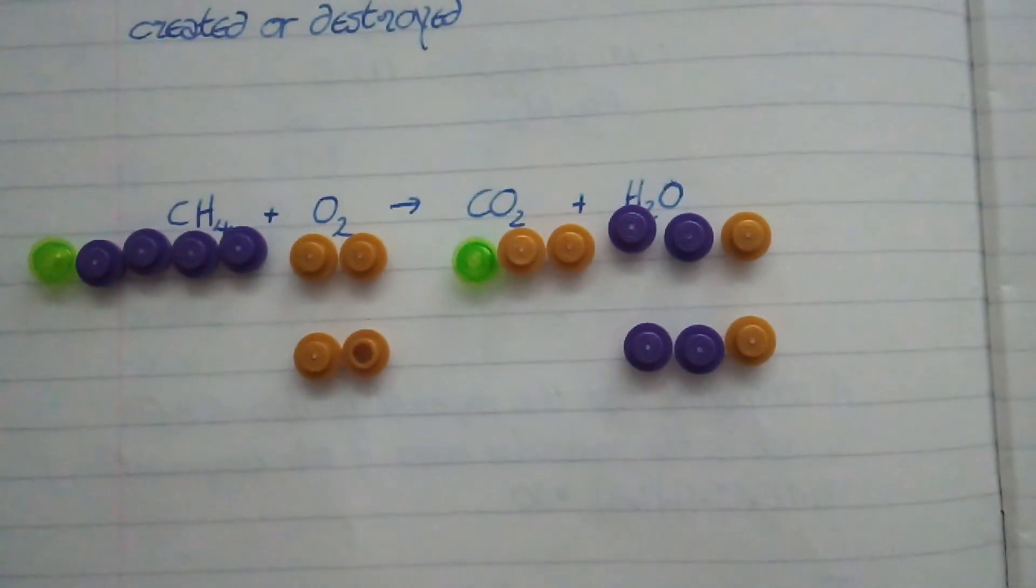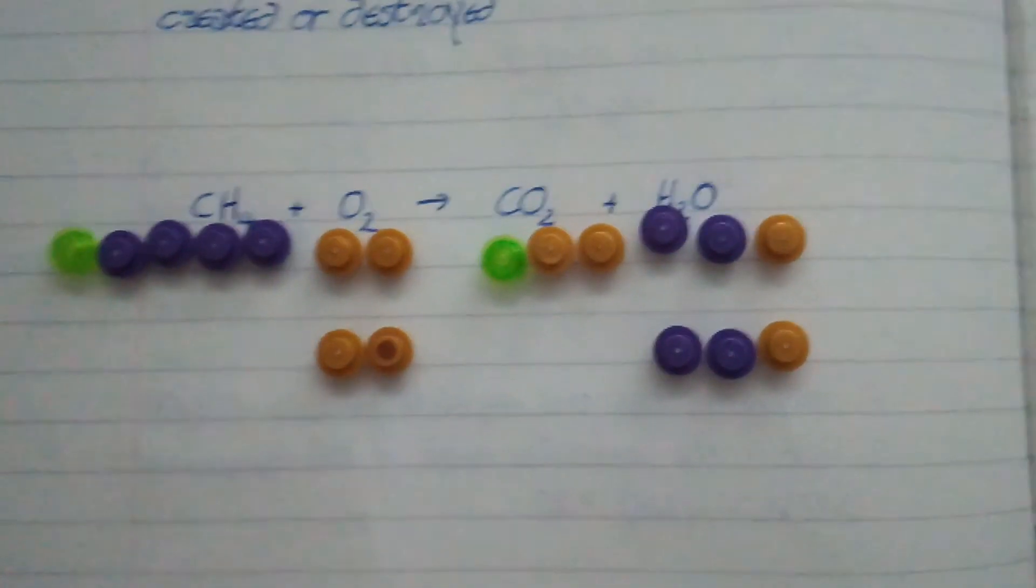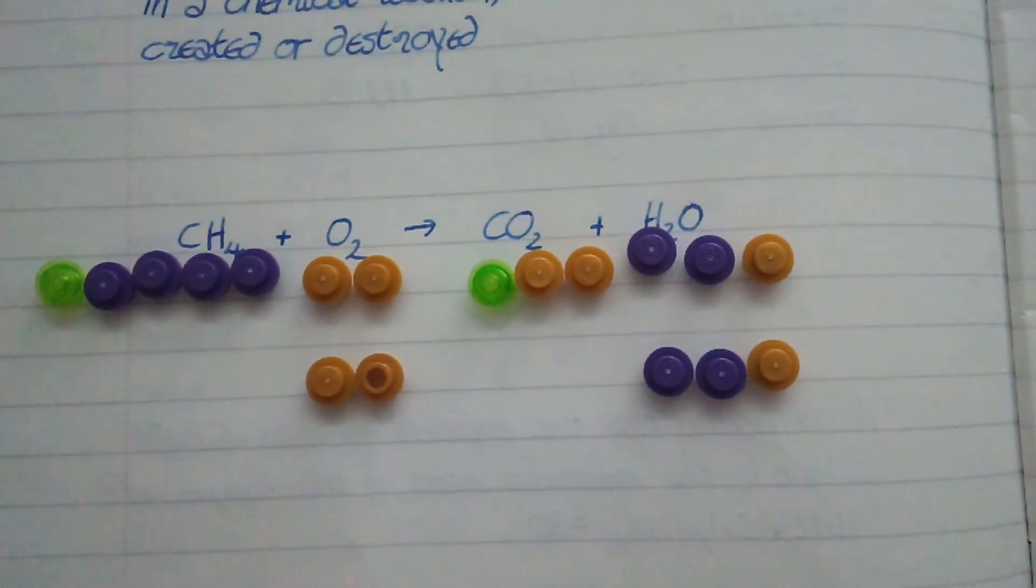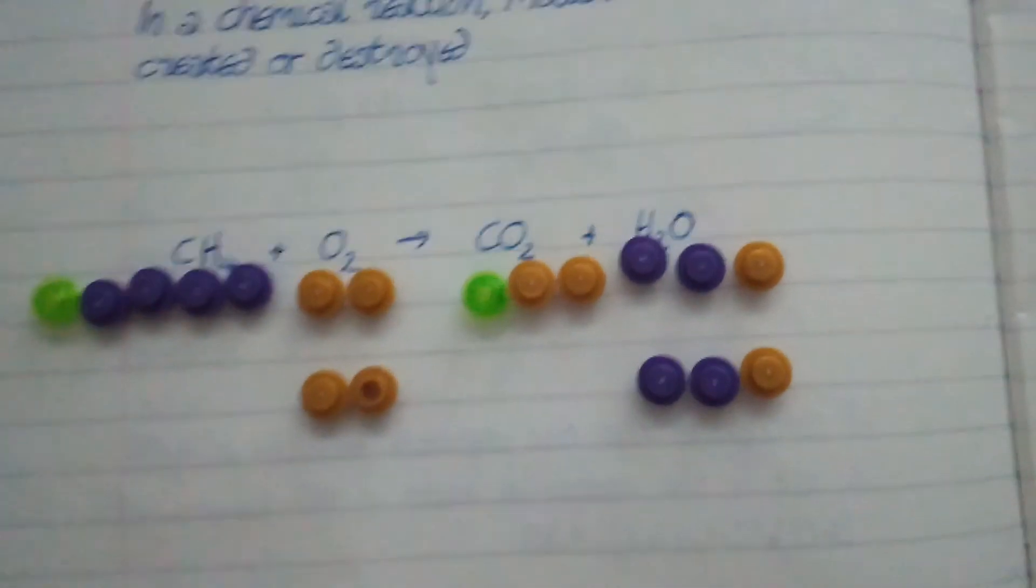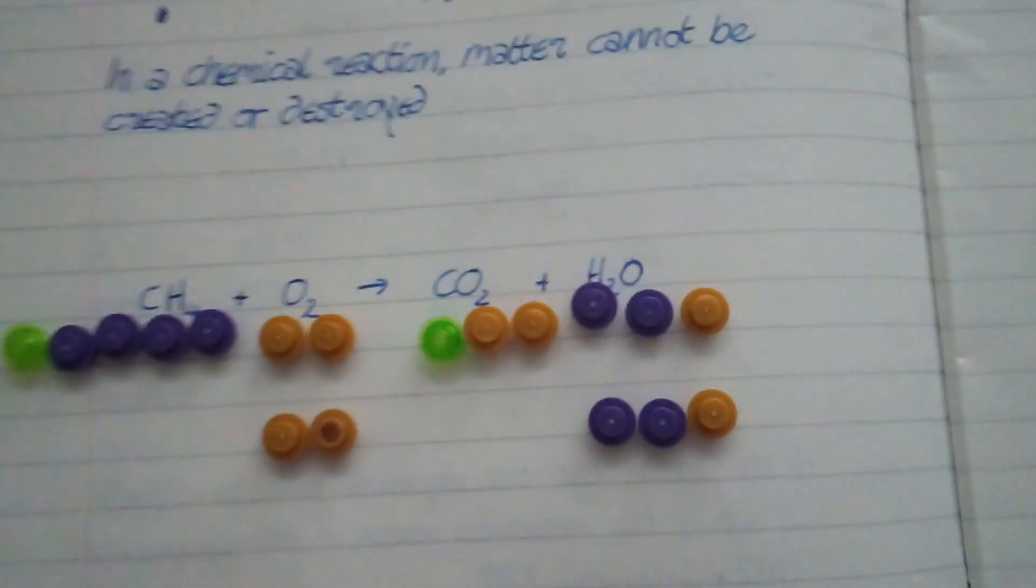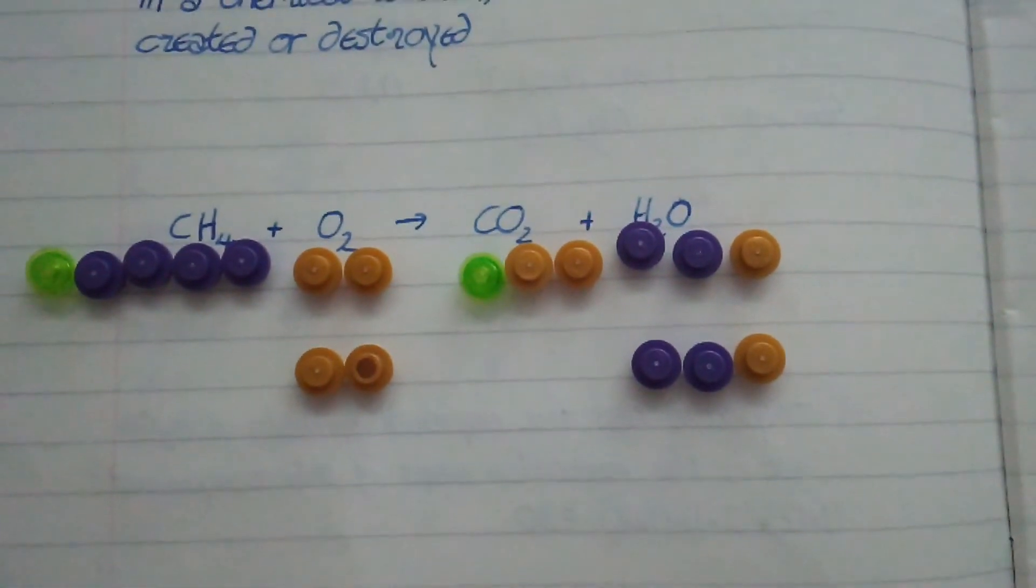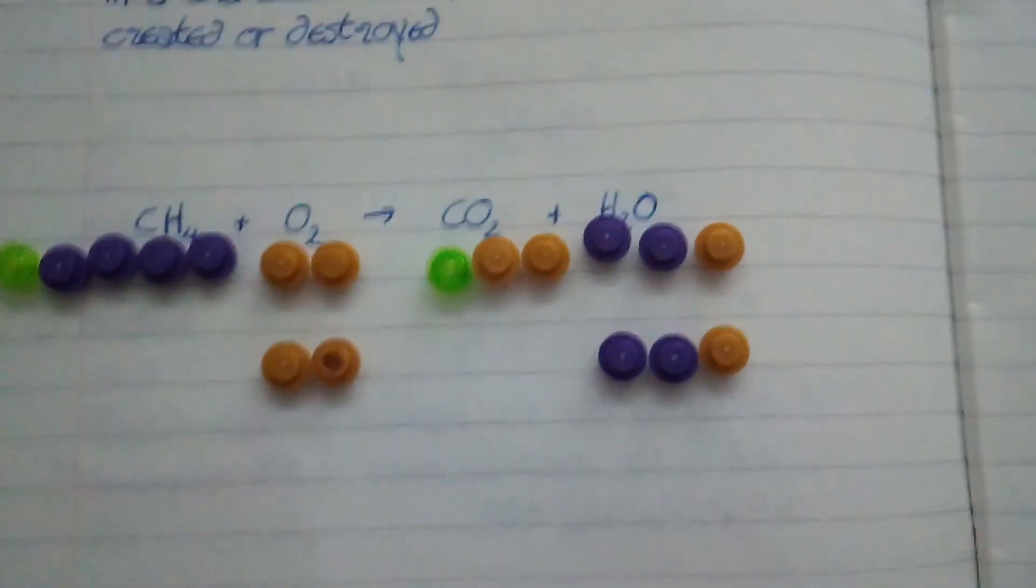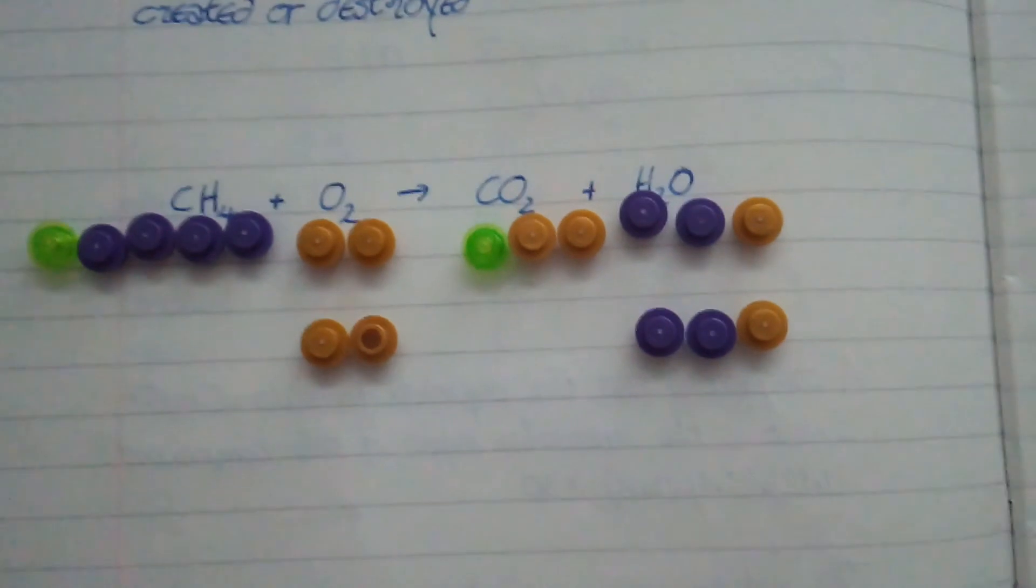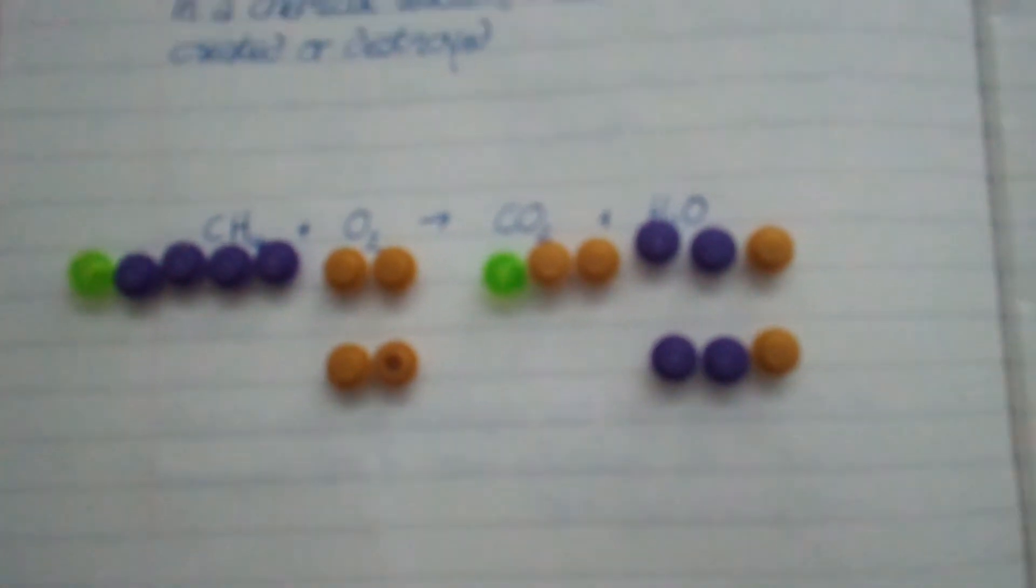So let's take a look. One green carbon. One green carbon. Carbon's good. Four purple hydrogens. One, two, three, four purple hydrogens. Excellent. Four gold oxygens. I've got one, two, three, four gold oxygens. Really important because it's so easy, especially with oxygen, which spreads itself out between different molecules. Really easy to miss oxygens. So that looks to me like it's balanced. So now all we need to do is write it down neatly.